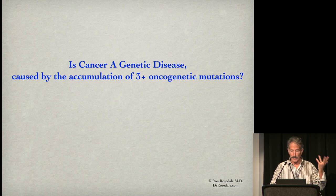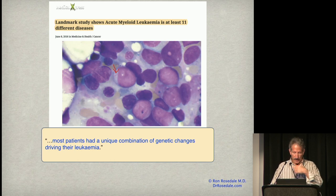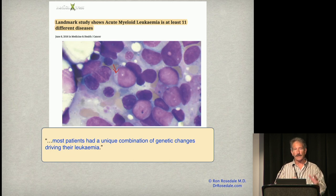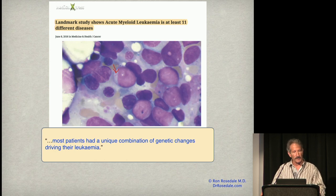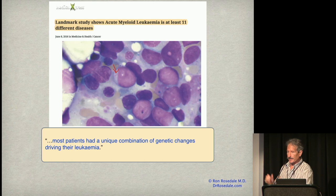Is cancer a genetic disease caused by the accumulation of several oncogenic mutations? Studies of leukemia show patients could be divided into 11 classes, and each of those classes had unique genetic profiles. In other words, almost every case of cancer has a unique genetic array of mutations. There aren't specific mutations for each cancer.